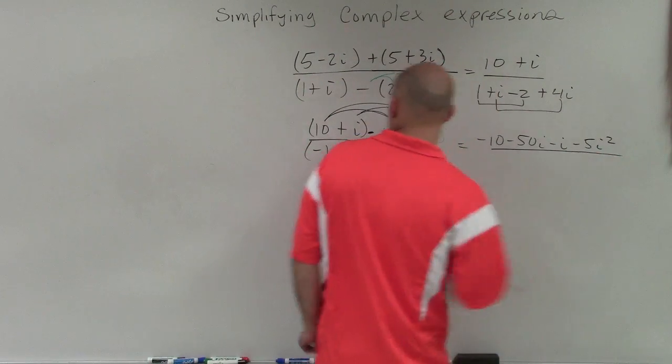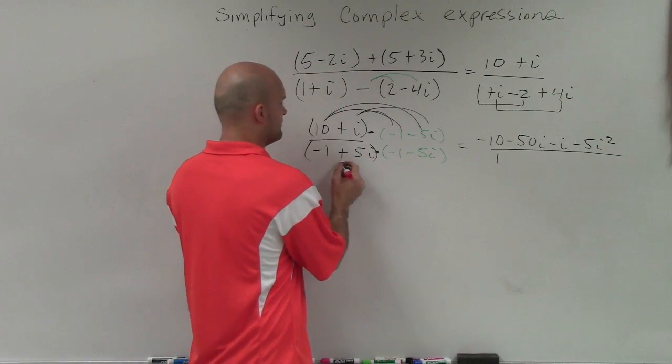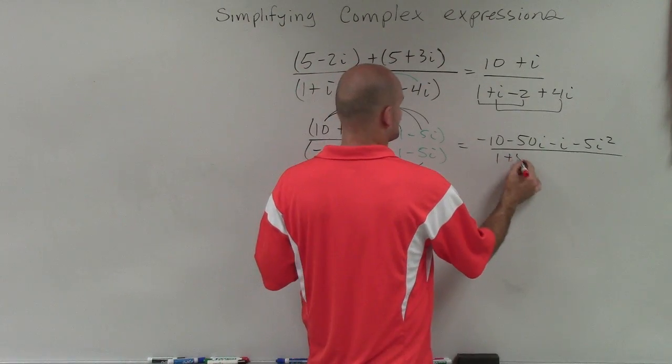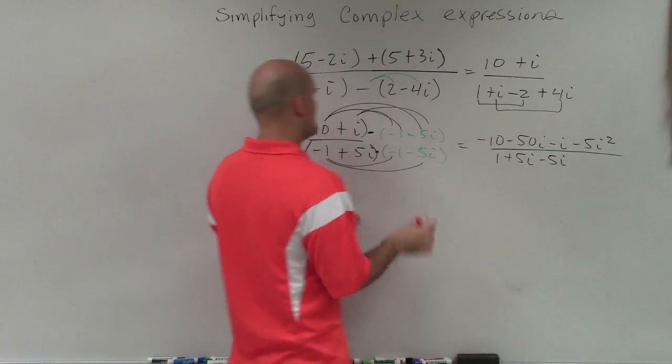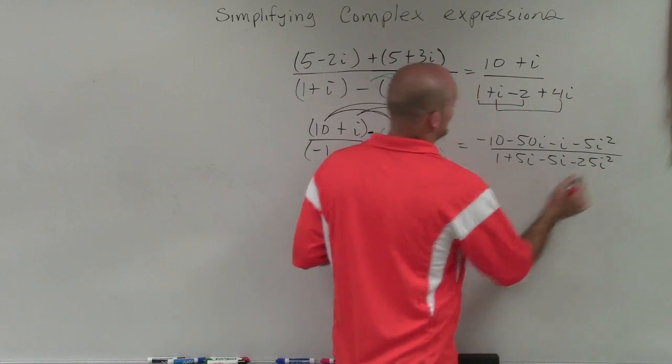Then down below, we have -1 times -1, which is positive 1. -1 times -5i is going to be a positive 5i. 5i times -1 is -5i. And 5i times -5i is -25i squared.